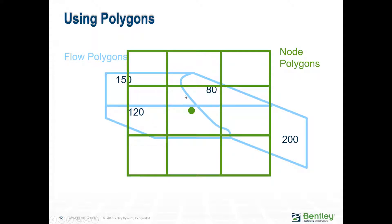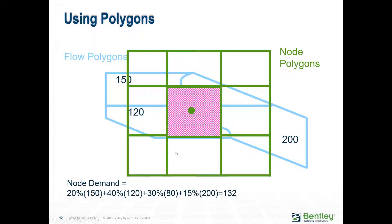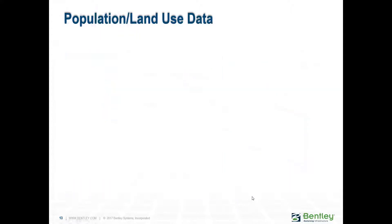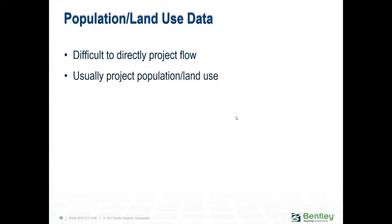You intersect flow polygons with your Thiessen or node polygons and then proportionally assign the node demand or load. And if you don't have any of that data — for a system that hasn't been built yet — you need to project the land use or population and infer what the flow would be.